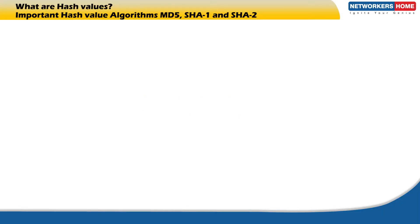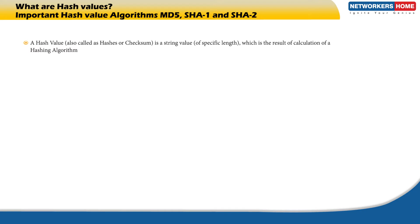What are hash values? A hash value, also called a hash or checksum, is a string value of specific length which is the result of the calculation of a hashing algorithm.